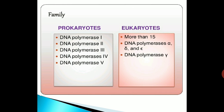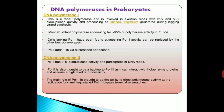In prokaryotes, the different types of DNA polymerases are DNA polymerase 1, polymerase 2, DNA polymerase 3, 4, and 5. In eukaryotes, more than 15 DNA polymerases — including alpha, delta, eta, sigma, and DNA polymerase gamma — are found.